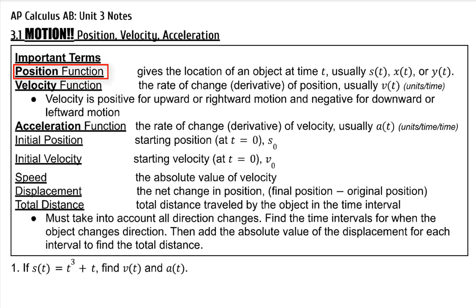A position function gives the location of an object at time t, and it's usually written as s of t, x of t, or y of t. A velocity function is the rate of change or derivative of the position function, usually v of t, and the velocity is in units per time.